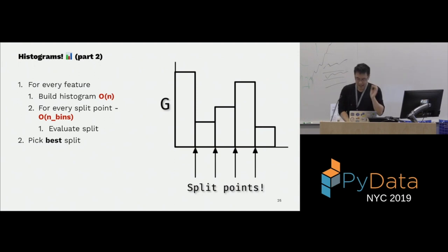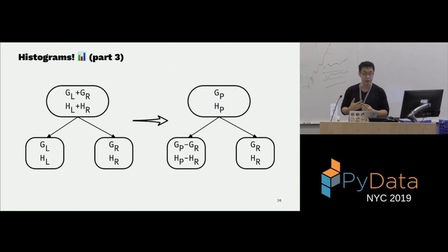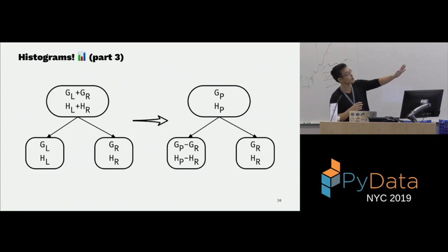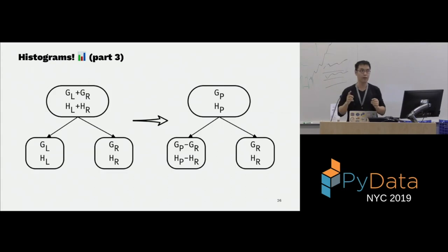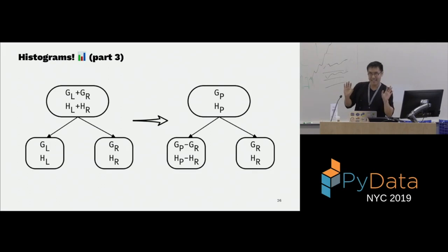You have a finite number of split points — n_bins split points — which makes it much faster. Also, normally when we arrive at a node, we already have the histogram for that node. We have the gradients and Hessians for the parent node already, so to get the histograms for left and right children, we only need to calculate one of them and take the difference to get the other. There's a nice relationship between parents and children.